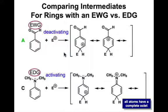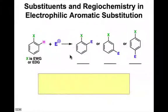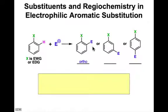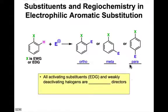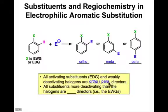Substituents are not only capable of deactivating or activating rings, but they can also influence the direction of regiochemistry in electrophilic aromatic substitutions. If X is an electron withdrawing or electron donating substituent, the incoming electrophile could substitute the hydrogen adjacent to that position — ortho substitution — or enter the meta position, two atoms removed, or the para position, three atoms removed. All activating substituents, the electron donating substituents, and the weakly deactivating halogens are known as ortho-para directors.